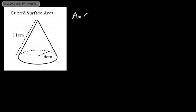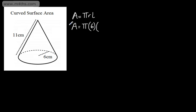Let's go ahead and look at a question. We need to find the curved surface area of this particular cone. We can say that the area is pi multiplied by the radius multiplied by the length. You might see it written as pi rl or pi lr — it really doesn't matter. So the area is going to be pi multiplied by the radius, which is 6, multiplied by the slant height, which is going to be 11.